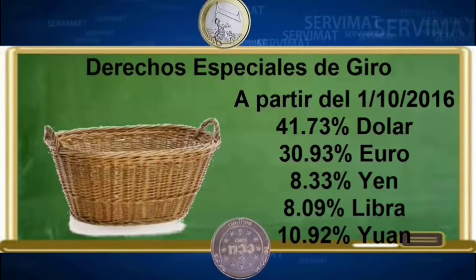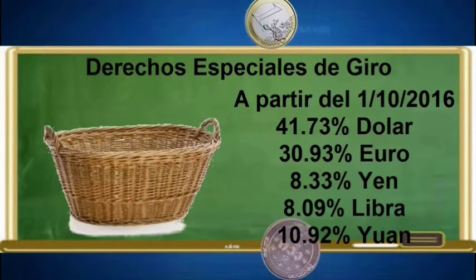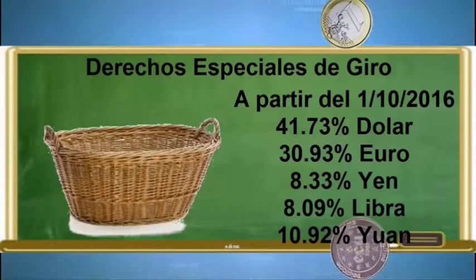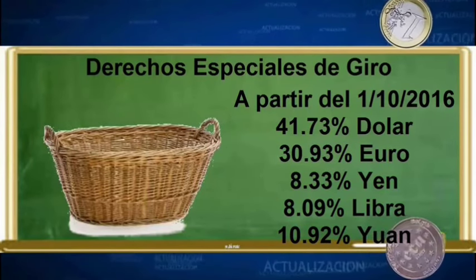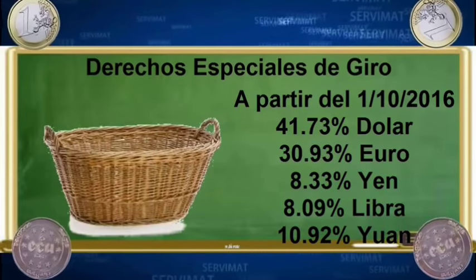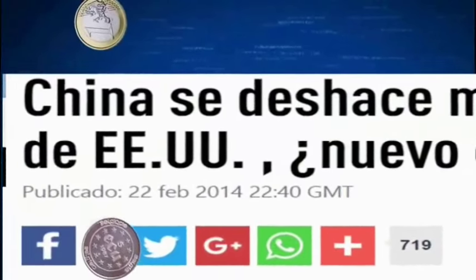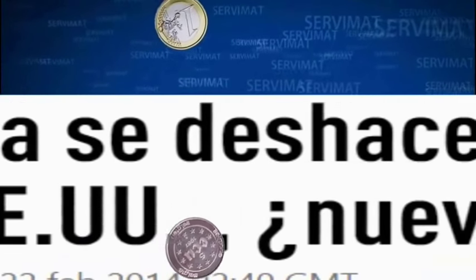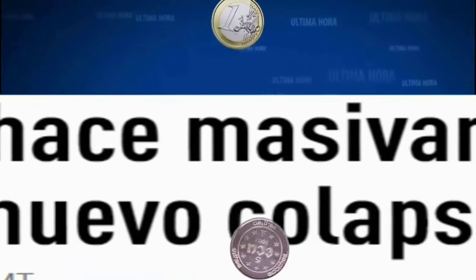Hasta aquí todo pareciera algo normal. Pero este simple hecho no solo nos dice que la economía china pesa en el mundo hoy más que nunca. También nos dice que el mundo unipolar ha llegado a su fin y por tanto la hegemonía estadounidense ha comenzado su declive. Algo que puede ocurrir a partir de este 1 de octubre es que el yuan por sí mismo sería una moneda de reserva mundial y por tanto China podría deshacerse de sus reservas en dólares, algo que ya ha venido haciendo desde hace algunos meses.